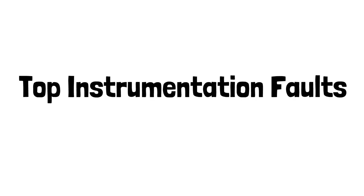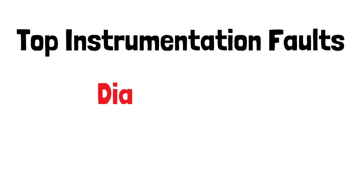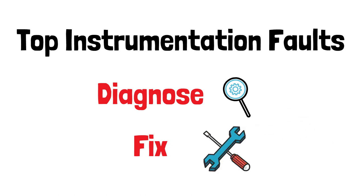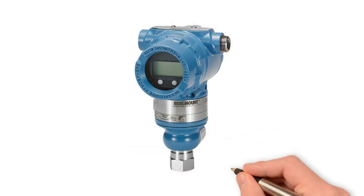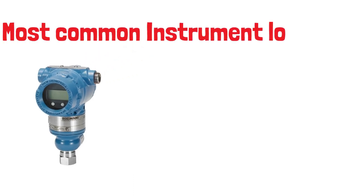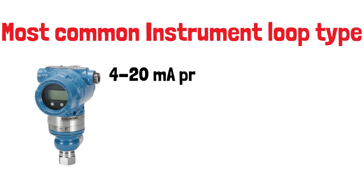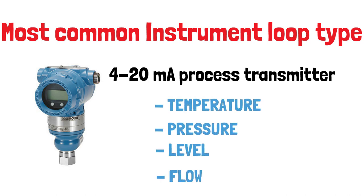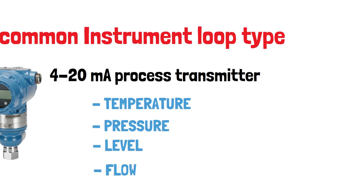Let's look at some of the most common instrumentation faults in industry, as well as how to diagnose and fix them. The faults we're going to look at will be on one of the most common types of instrumentation loops you'll find across industry: a 4 to 20 milliamp process transmitter. The transmitter could be a temperature, pressure, level, or flow instrument.